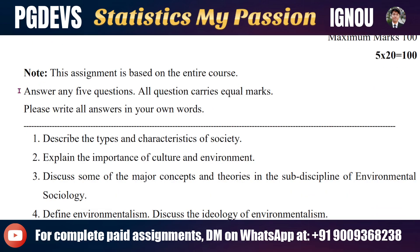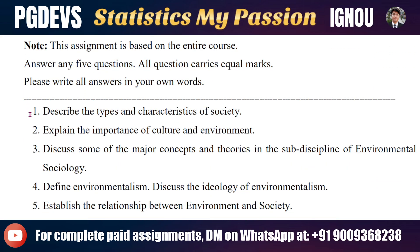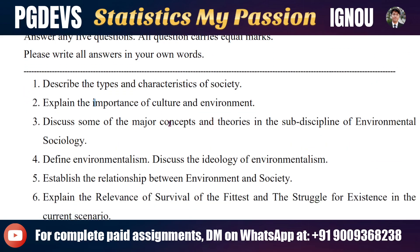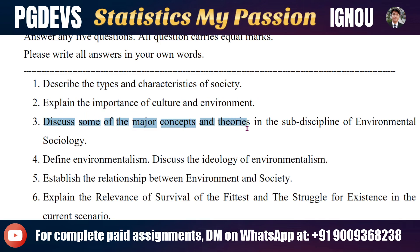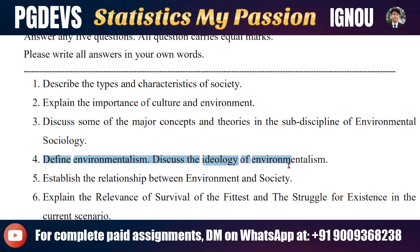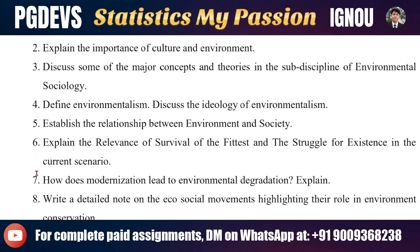We need to answer any five questions out of eight. The questions are: describe the types and characteristics of society; explain the importance of culture and environment; discuss major concepts and theories in the sub-discipline of environmental sociology; define environmentalism and discuss its ideology. There are five through eight as well, making eight total questions.